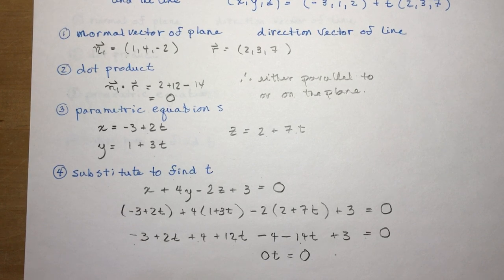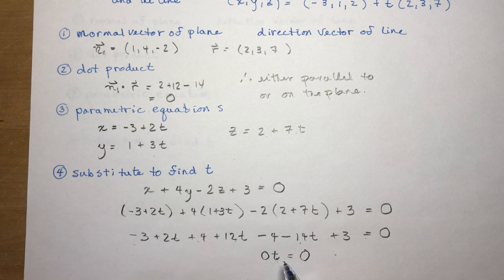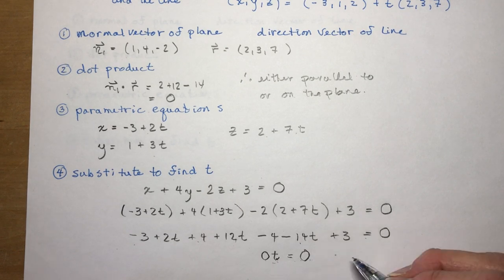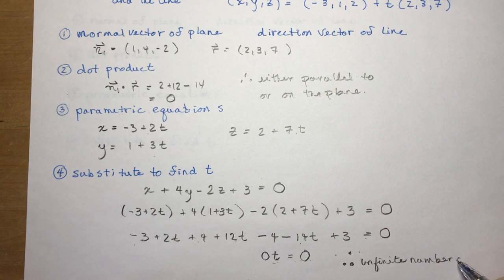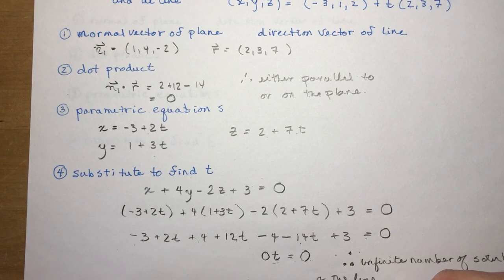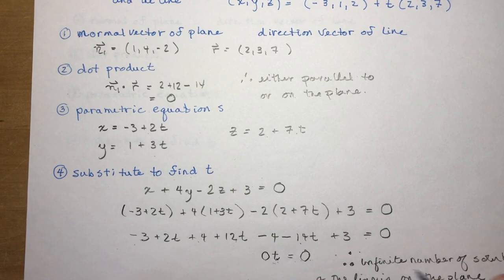How many solutions do I have for t? I can put in any value — 1, 2, 3, 4, 5, anything — because 0 times any number will always give me 0. So there are an infinite number of solutions, and the line is on the plane. It's important to understand that 0t equals 0 means whatever I plug in, I still get 0.